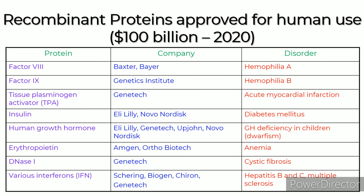A table shows recombinant proteins approved for human use with a $100 billion market share in 2020. These include Factor VIII by Baxter Bayer for treating hemophilia A, Factor IX by Genetics Institute for hemophilia B, tissue plasminogen activator by Genentech for acute myocardial infarction, insulin by Eli Lilly and Novo Nordisk for diabetes mellitus, human growth hormone for GH deficiency in children, erythropoietin by Amgen and Ortho Biotech for anemia, DNase I for cystic fibrosis, and various interferons for treating hepatitis B and C and multiple sclerosis.